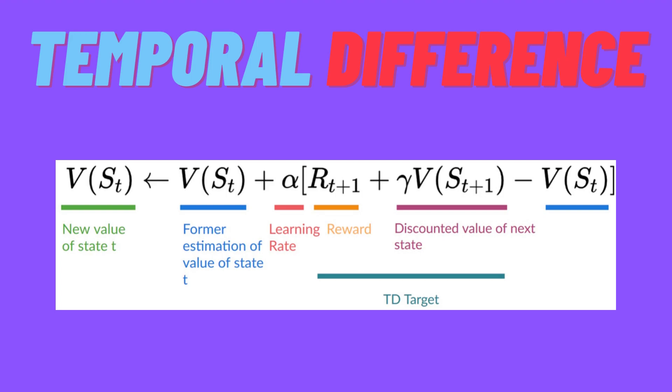If we look at the TD formula: V(st) = V(st) + alpha * [R(t+1) + gamma * V(st+1) - V(st)]. In the current state, we take one step to get a reward R(t+1), then we look at the next state st+1 and its value V(st+1) multiplied by gamma — the discount factor hyperparameter — and subtract V(st).